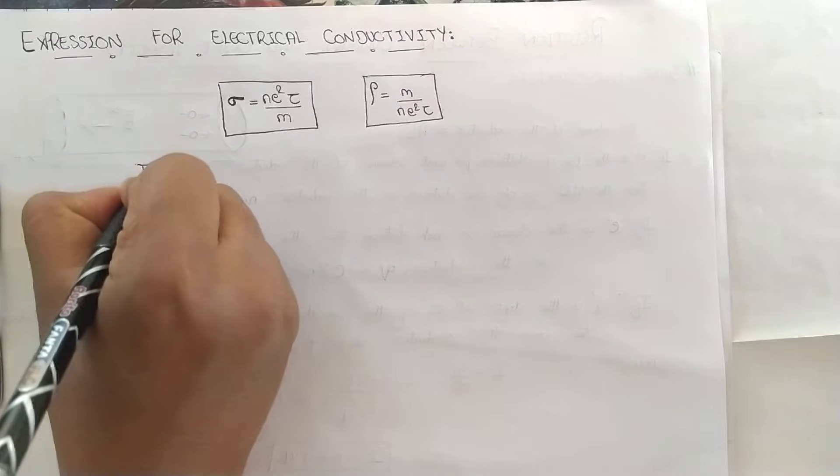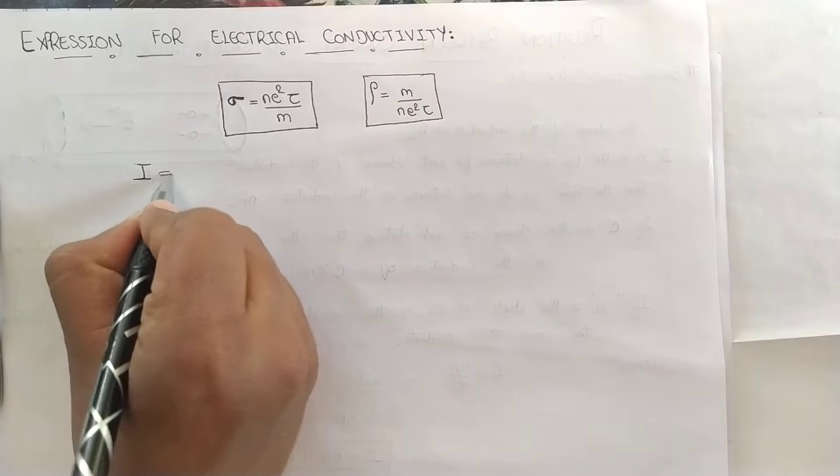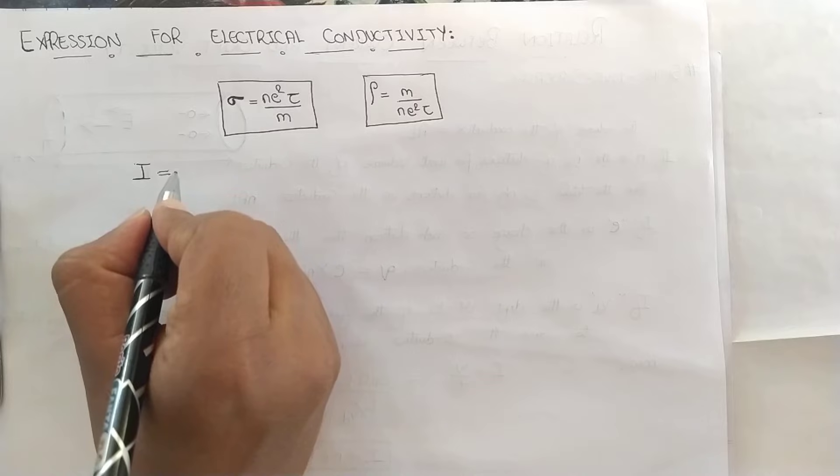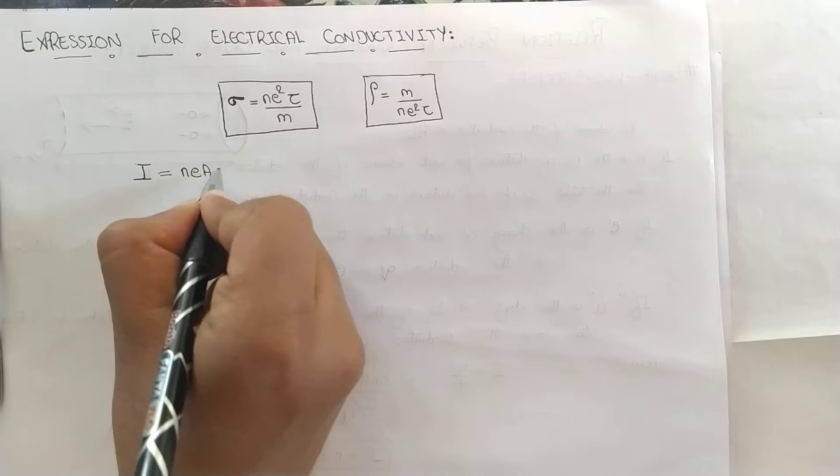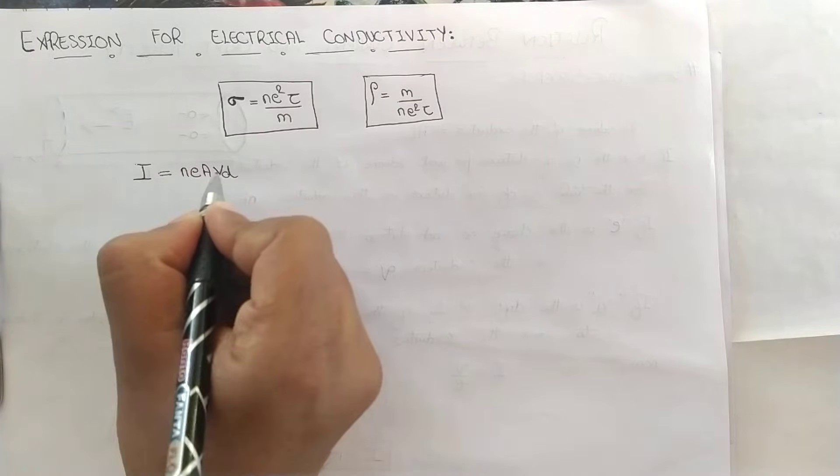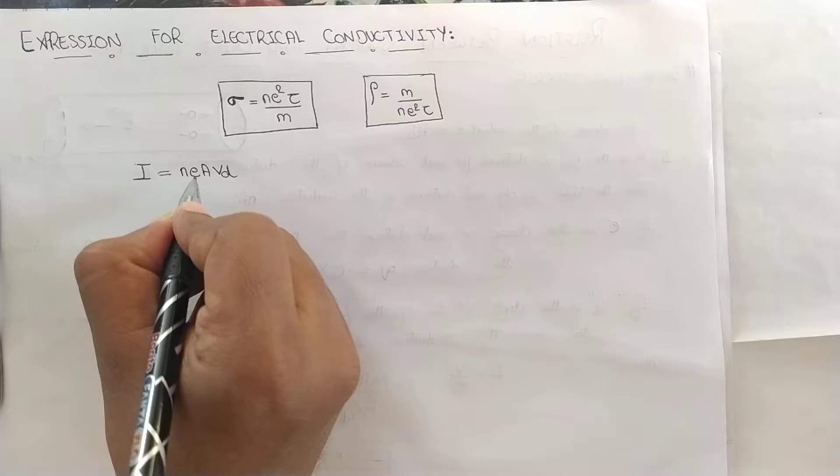As we all know, the expression for current in an electrical conductor of applied electric field is given by I equals N E A VD. N is the number of free electrons available, E is the charge on each electron, A is the area of cross section, and VD is the drift velocity of the free electrons.